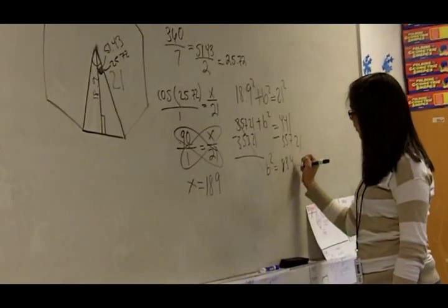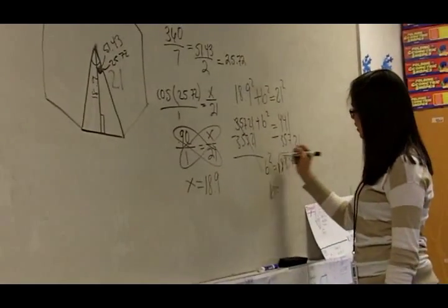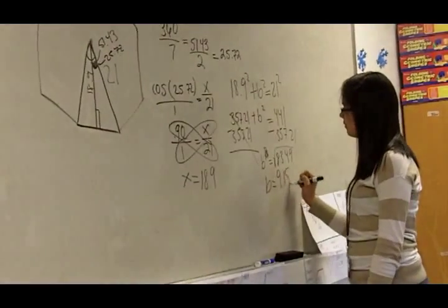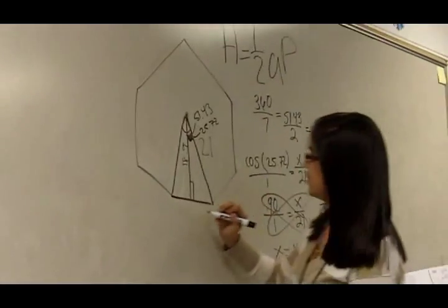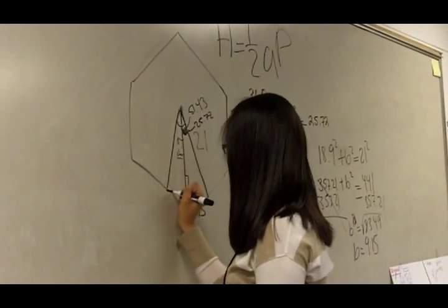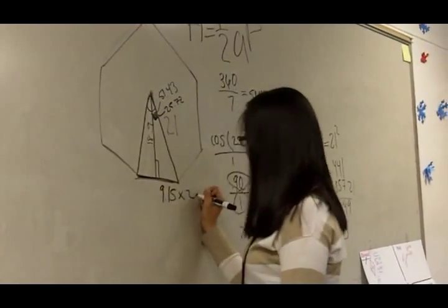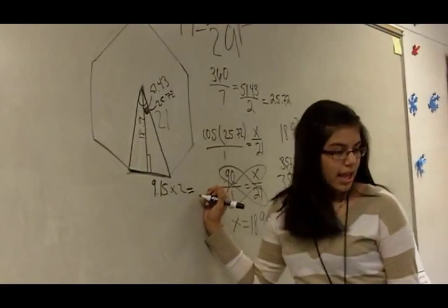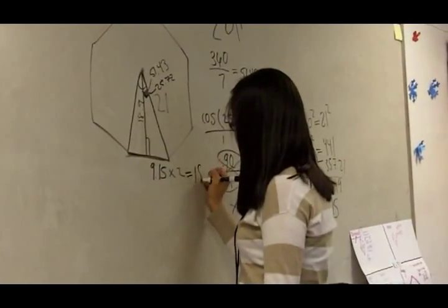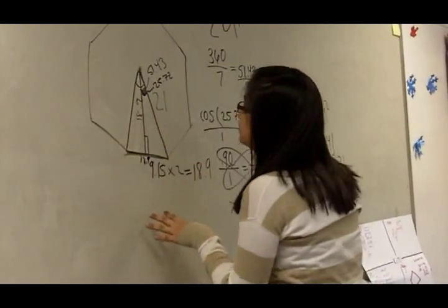b squared equals 83.79 and b equals around 9.15. That is half of your side, and then you have to multiply that times 2 to get the full side, which equals 18.3.